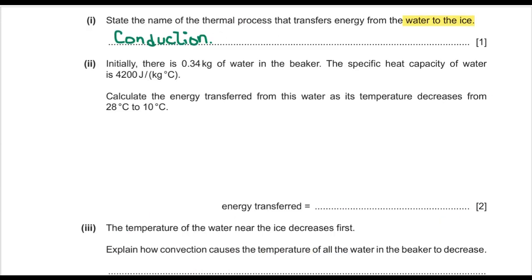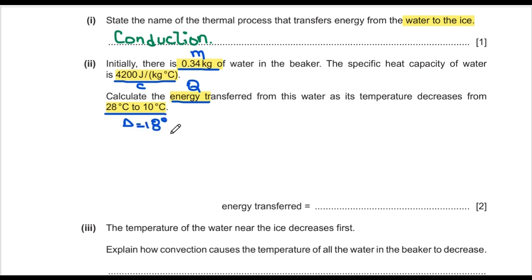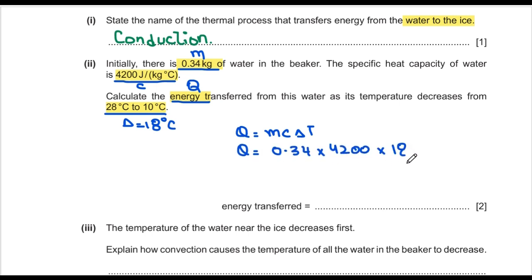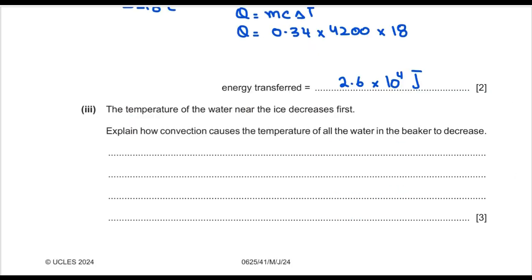Question two says initially there is 0.34 kg of water in a beaker. The specific heat capacity of water is 4200 J/kg°C. Calculate the energy transferred from the water as the temperature decreases from 28°C to 10°C. Using E = mcΔT: mass = 0.34, specific heat = 4200, change in temperature = 18°C. Energy transferred = 2.6 × 10⁴ joules.